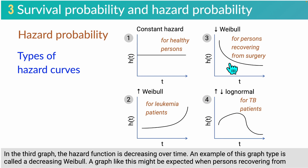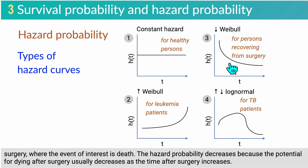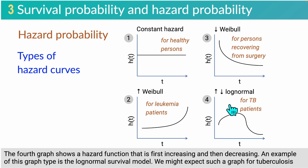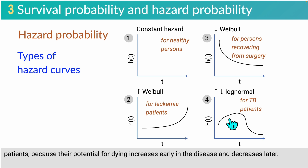In the third graph, the hazard function is decreasing over time — an example is a decreasing Weibull model. A graph like this might be expected for a person recovering from surgery where the event of interest is death. The hazard probability decreases because the potential for dying after surgery usually decreases as time after surgery increases. The fourth graph shows a hazard function that is first increasing and then decreasing — an example is a log-normal survival model. We might expect such a graph for tuberculosis patients because their potential for dying increases early in the disease and decreases later.